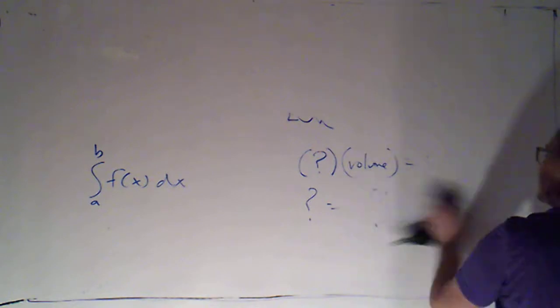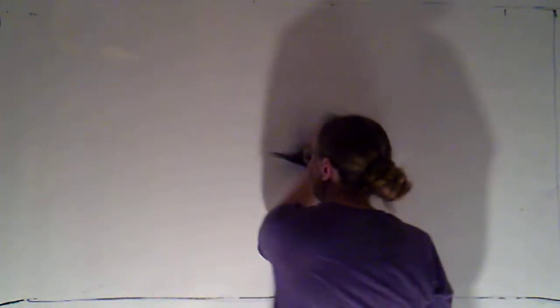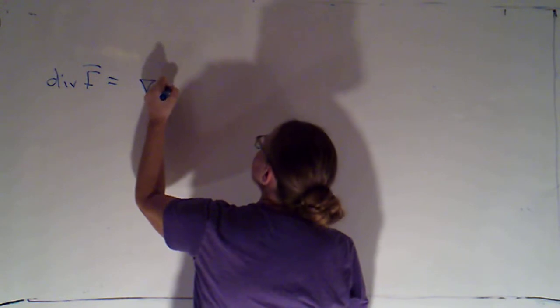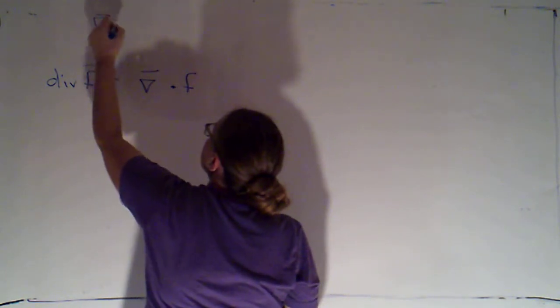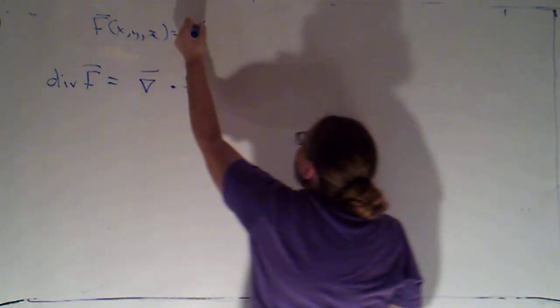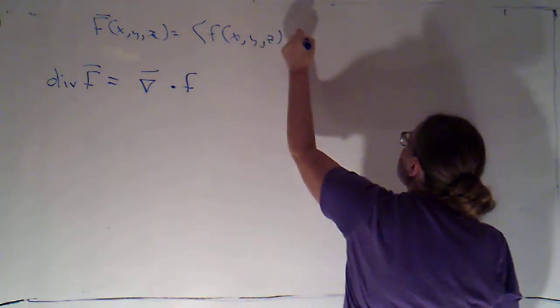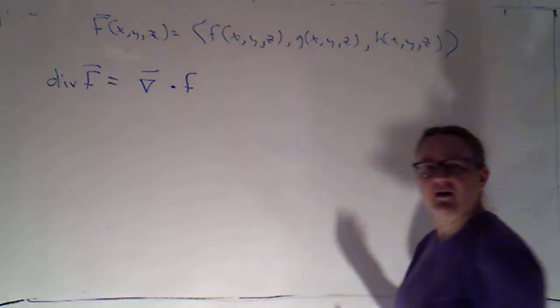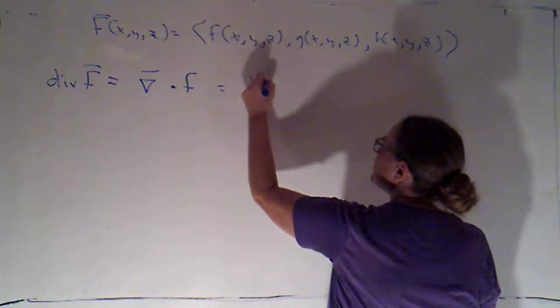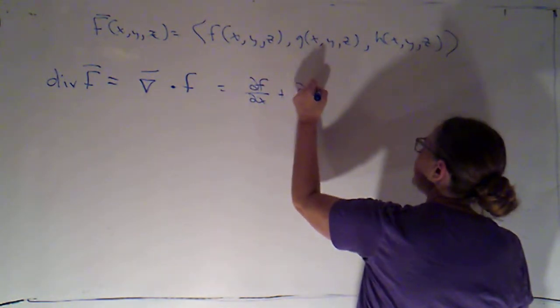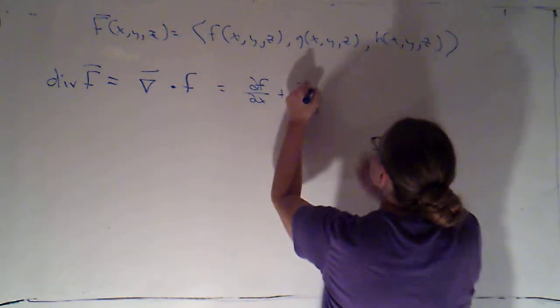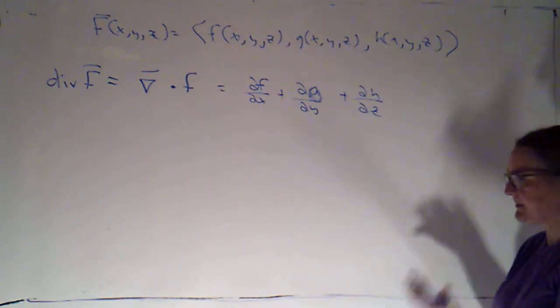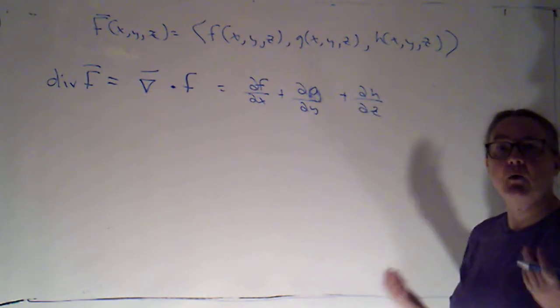And in fact, there are two ways that I can define what divergence of F is. We've seen one. Divergence of F is del dotted with F. So if my vector field F had as its component function F of X, Y, Z, G of X, Y, Z, H of X, Y, Z, this is sort of what I call the plug and chug definition. This tells me how to calculate it. This would just be the partial of F with respect to X plus the partial of G with respect to Y plus the partial of H with respect to Z. Fantastic for wanting to know how to calculate it. Tells me exactly what to do. Fairly meaningless for understanding what it means.